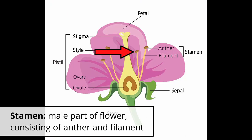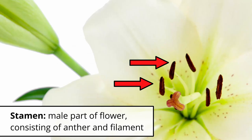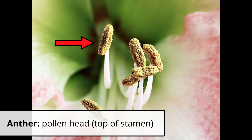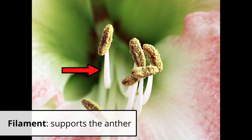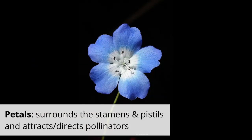Then you have the male parts of the flower, which are called stamens, and these are usually surrounding the female part of the flower. Stamens have two parts: the anther at the top, which contains the pollen and is sometimes referred to as the pollen head, and this is supported by the long filament.